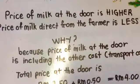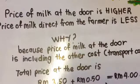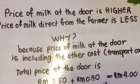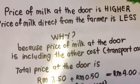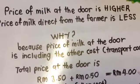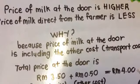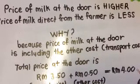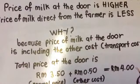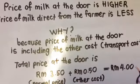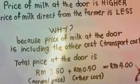The price of milk at the door is higher than the price of milk direct from the farmer, because the price of milk at the door includes other costs such as transportation costs. The price of milk at the door is RM3.50 plus 50 cents, making a total of RM4.00.